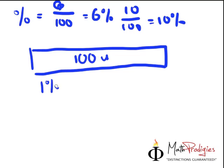So 1% would actually be the same as saying 1 unit, and 100% would be the same as saying 100 units, okay? So this is like the most basic thing about percentage.